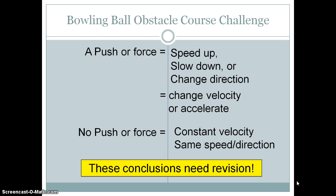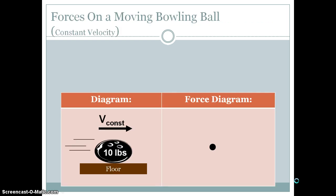Let's look at the situation where we weren't touching the bowling ball and it was moving along at a relative constant velocity. Make sure you go back to your guided notes and fill this out as we discuss these next three examples.